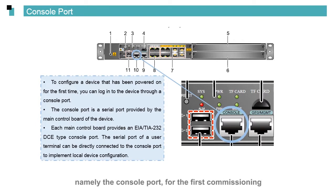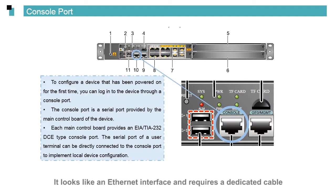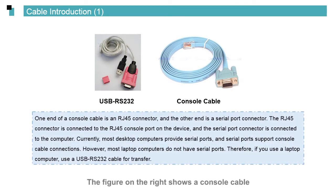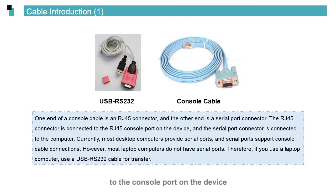For the first commissioning, the console port is a physical interface clearly marked on the device. It looks like an Ethernet interface and requires a dedicated cable, called a console cable, to connect to a computer. The figure on the right shows a console cable. The RJ45 connector at one end of the cable is connected to the console port on the device, and a serial port connector is connected to a computer's chassis.